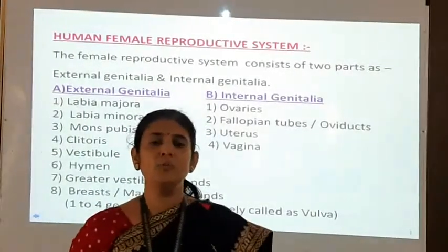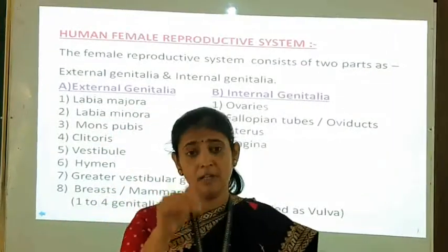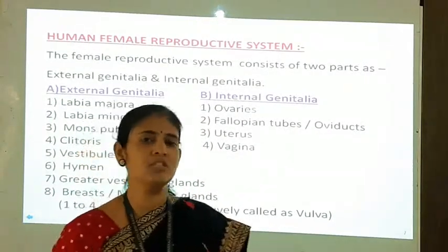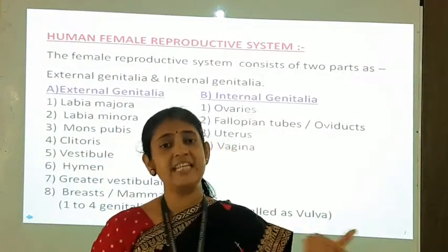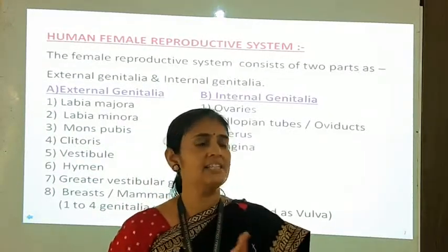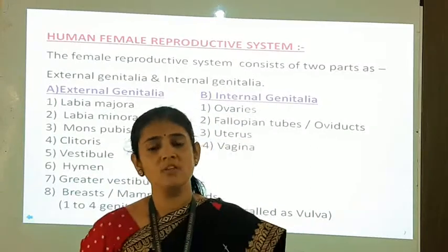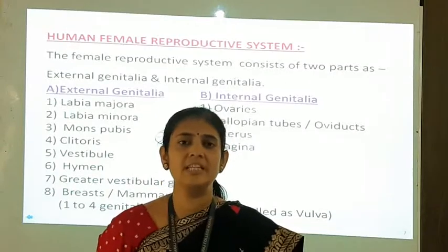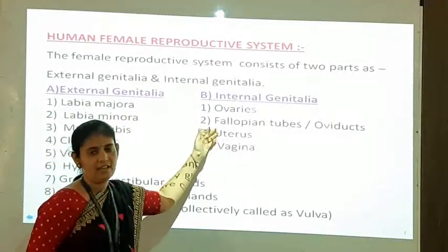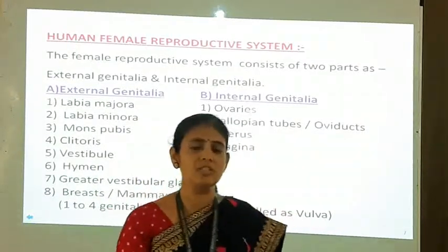In the last lecture we studied the human male reproductive system. In today's lecture we are going to study the human female reproductive system. Just as the male reproductive system has two parts — male reproductive tract and accessory sex glands — likewise the female reproductive system also has two different parts: external genitalia and internal genitalia.